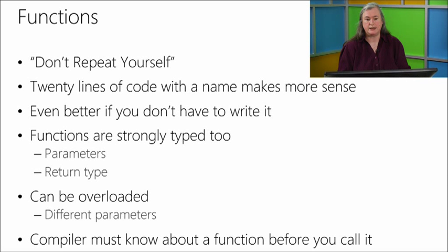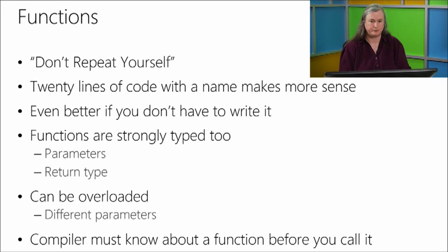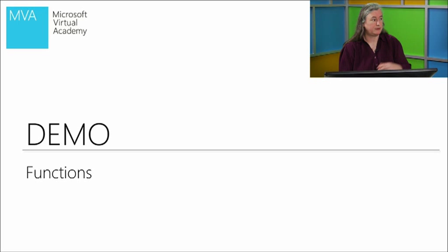If you want to write a function that takes a number and does something to it, it takes a specific type — an integer or a double — and it's not appropriate to give it a string or another type. With strongly typed parameters, you can have two functions with the same name as long as the compiler can tell them apart. One way is if they take a different number of parameters. To use a function, you have to tell the compiler it exists — either by giving all the code for it to compile, or by making a declaration: a promise you keep later.